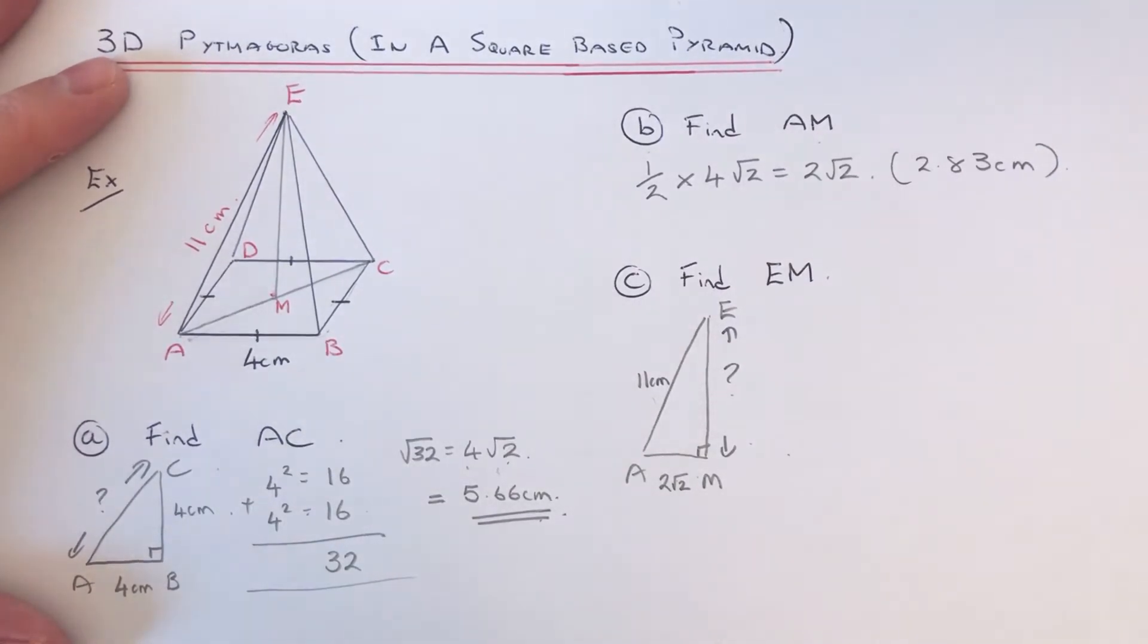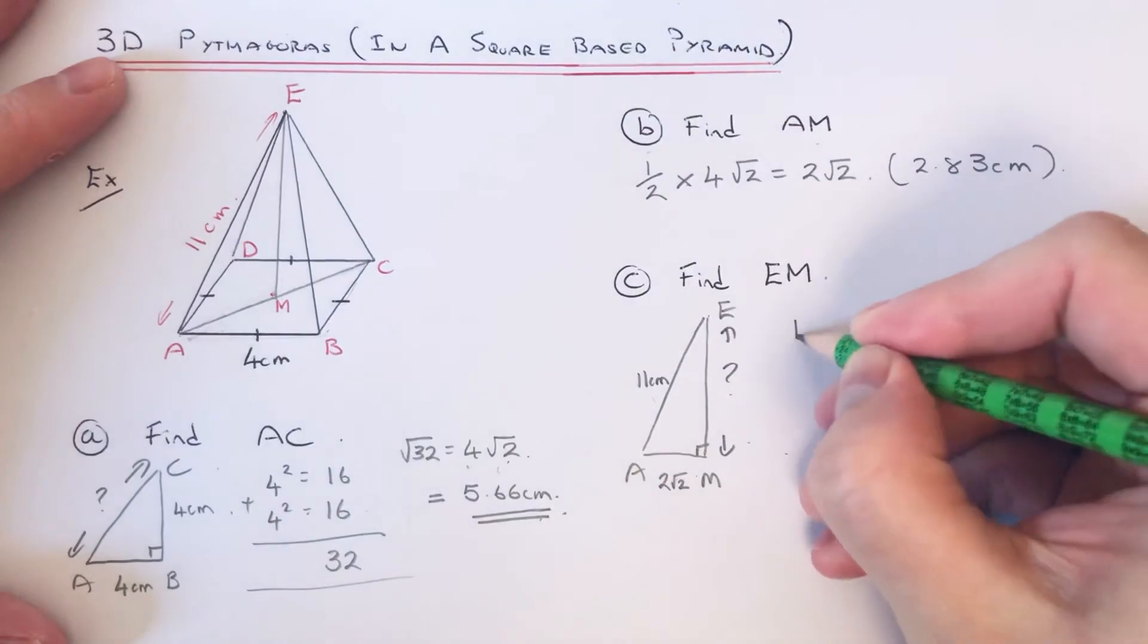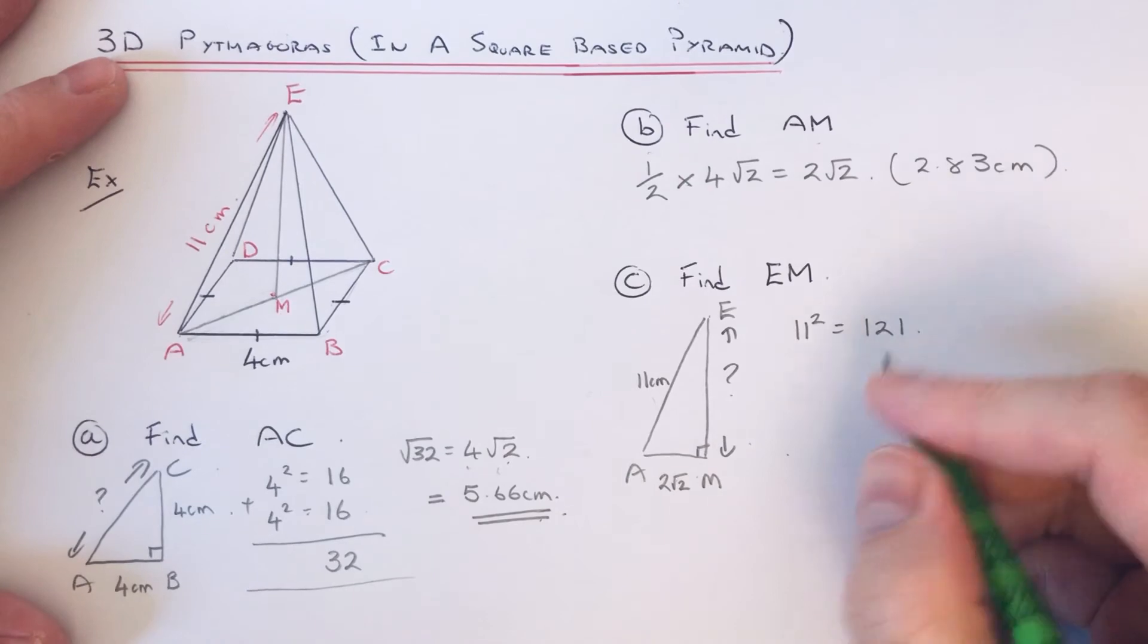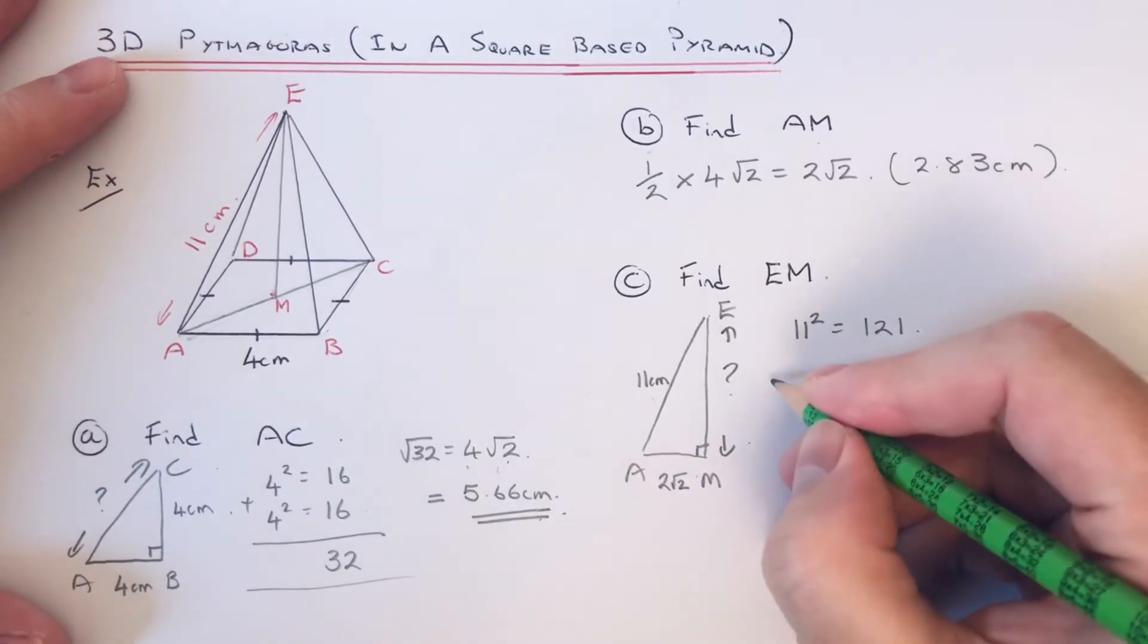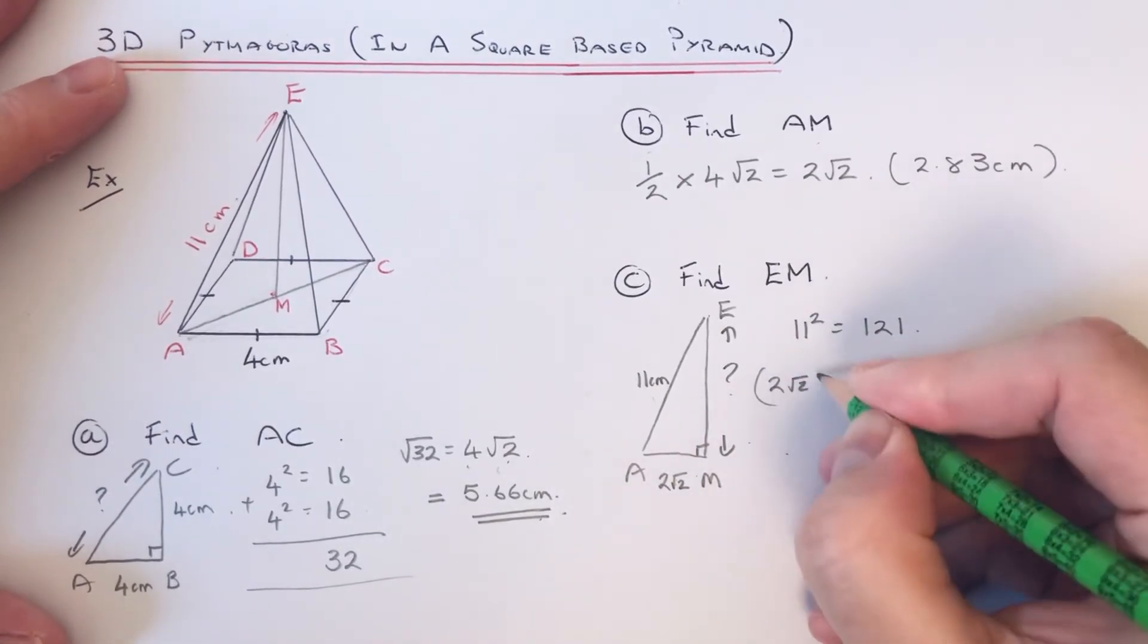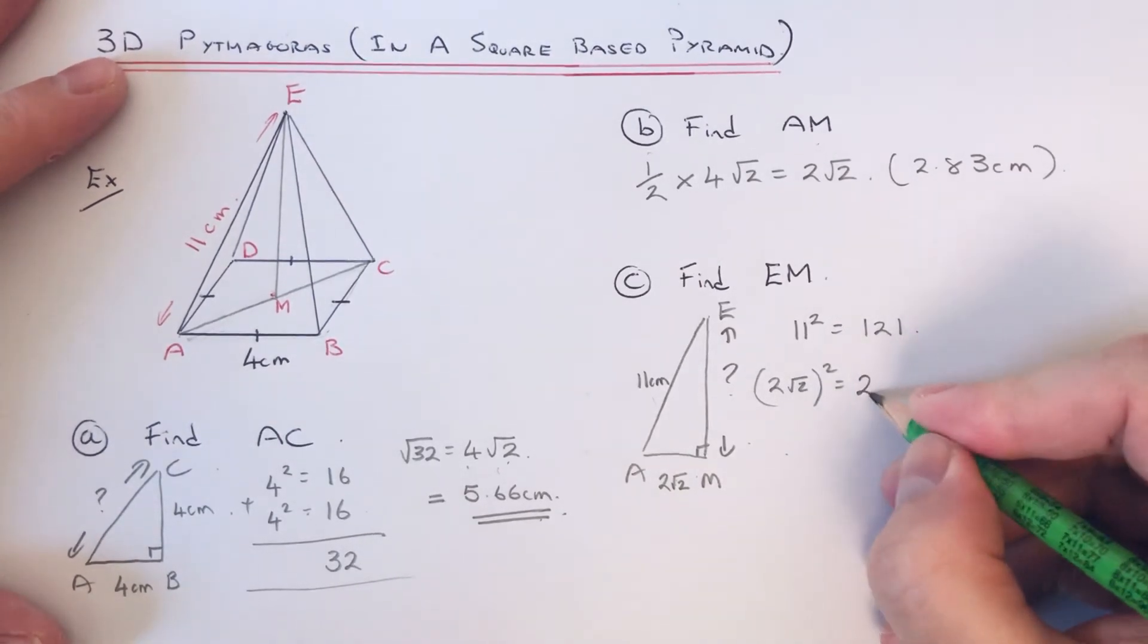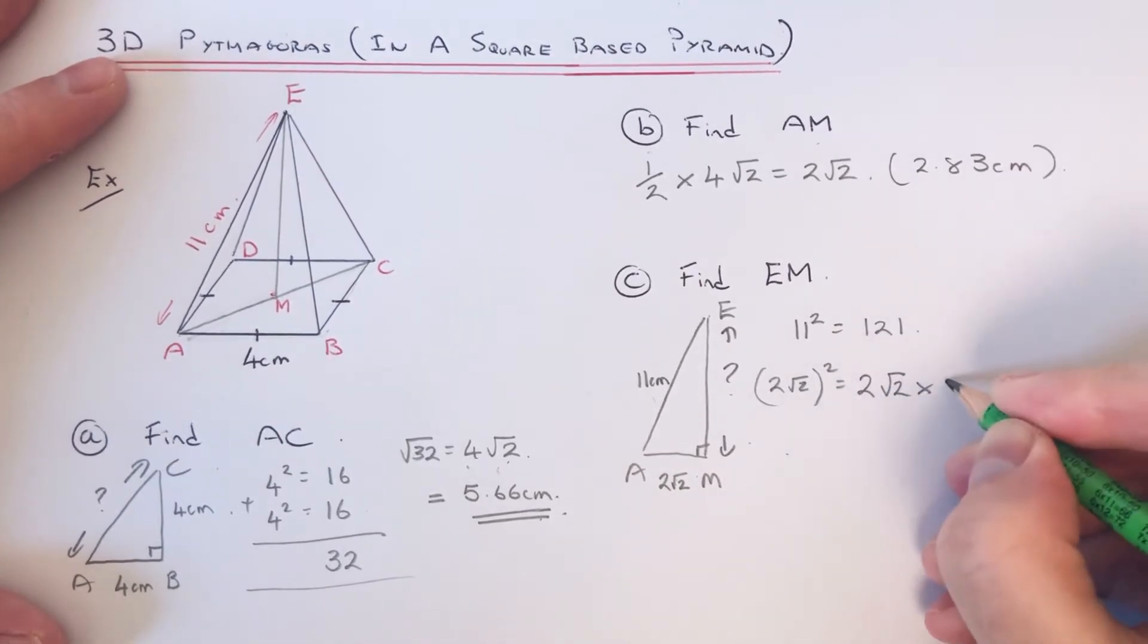So again, we've got two sides of the right-angle triangle and we need to work out the third side—the shorter side. So if we square our measurements: 11 squared is 121. So we've got to square 2√2.